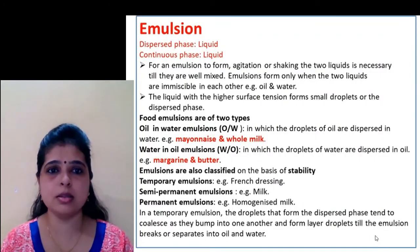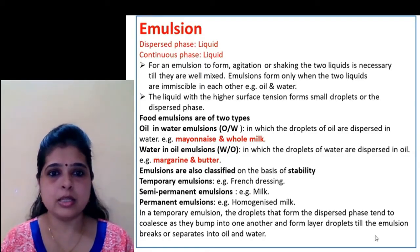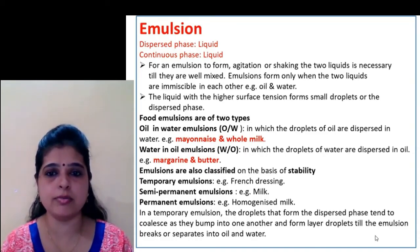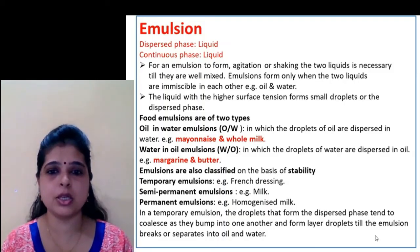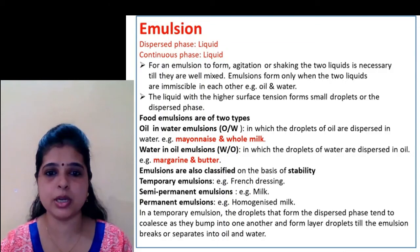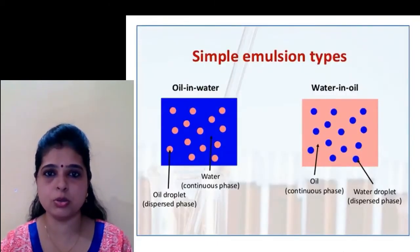Next colloidal system is emulsion, in which liquid is the dispersed phase and liquid is the continuous phase. It is of two types: oil-in-water emulsion, in which droplets of oil are dispersed in water — examples are mayonnaise and whole milk — and water-in-oil emulsion, in which droplets of water are dispersed in oil, the best example being butter. Emulsions are also classified on the basis of stability as temporary, semi-permanent, and permanent emulsion. French dressing is temporary, milk is semi-permanent, and homogenized milk is permanent emulsion.